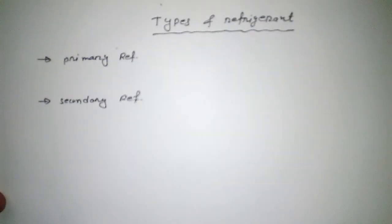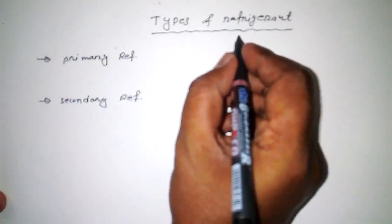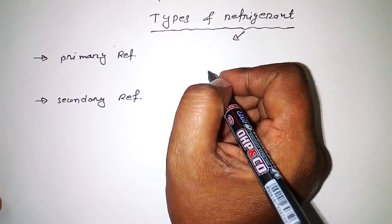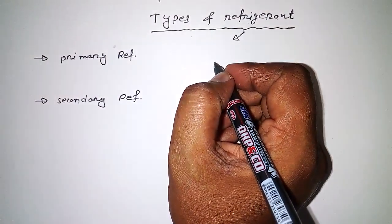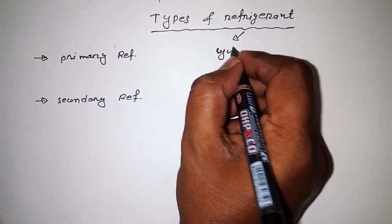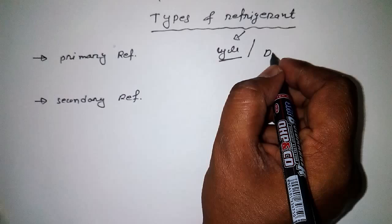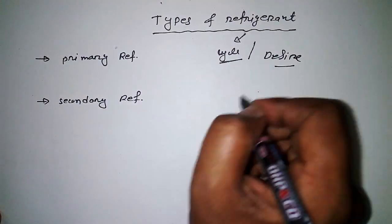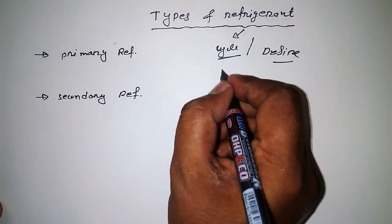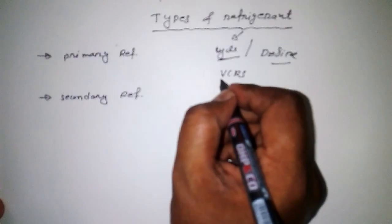Today we're going to discuss types of refrigerant. A refrigerant is a substance which works in a cyclic process so we can get a desired temperature by using a certain system. For example, suppose we are using a VCR cycle.